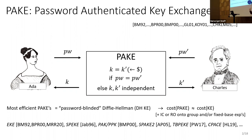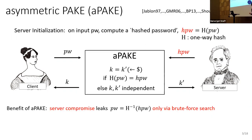The most efficient PAKEs in the random oracle model all come from blinding Diffie-Hellman key exchange using passwords. This starts with Encrypted Key Exchange by Bellovin and Merritt, and continues with results using the ideal cipher, then random oracle onto the group. The costs were optimized and are basically roughly like a key exchange.